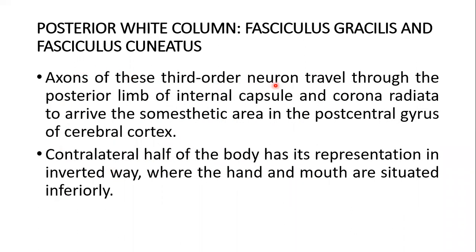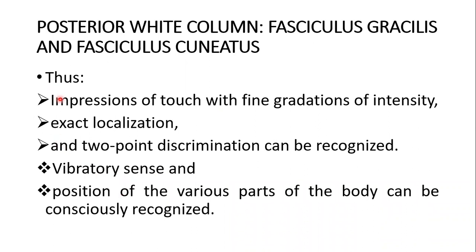Axons of the third-order neuron travel through the posterior limb of the internal capsule and corona radiata to arrive at the somatosensory area in the post-central gyrus of the cerebral cortex. The contralateral half of the body has its representation in an inverted way, where the hand and mouth are situated inferiorly — this is the sensory homunculus. Through this pathway, impressions of touch with fine gradations of intensity, exact localization, two-point discrimination, vibratory sense, and position of various parts of the body can be consciously recognized.